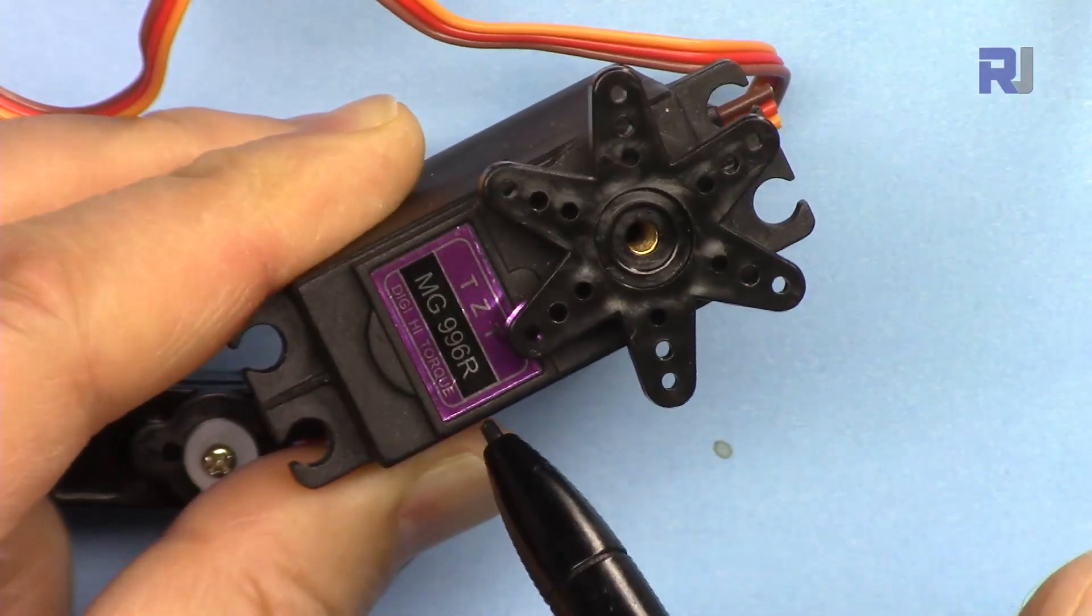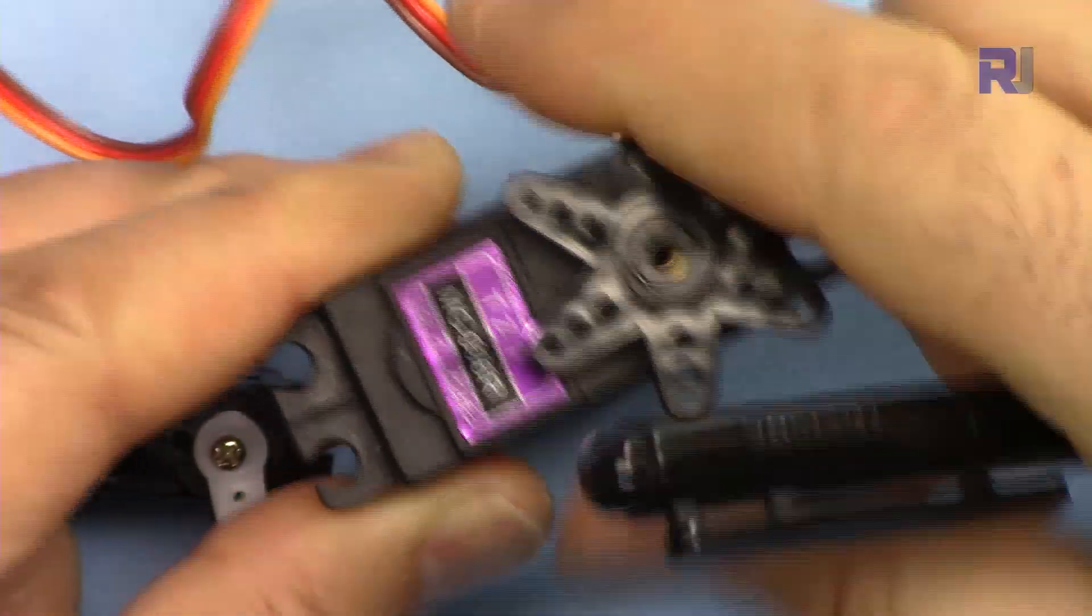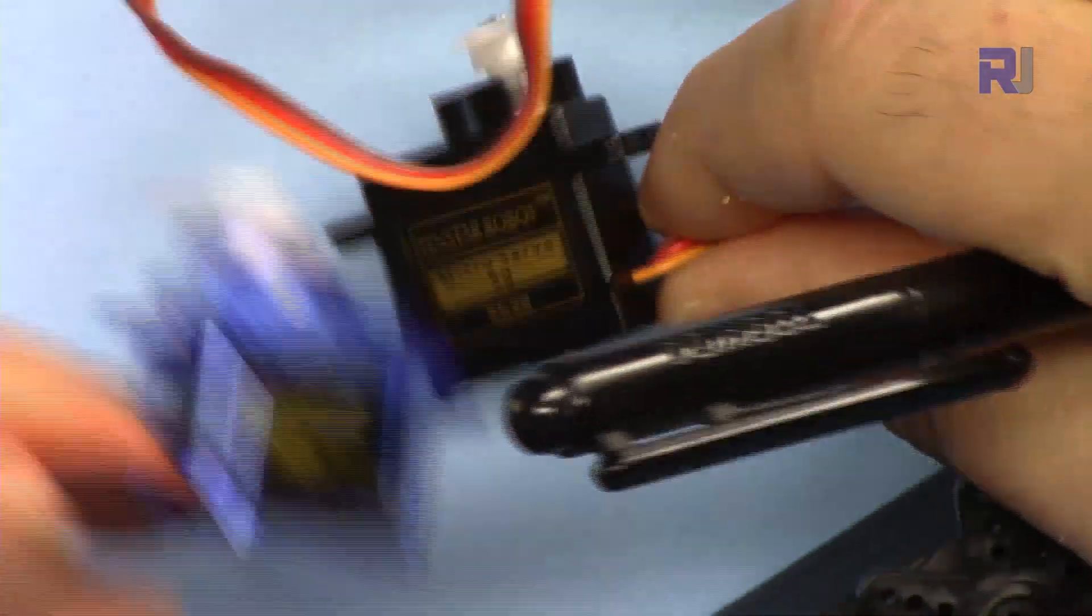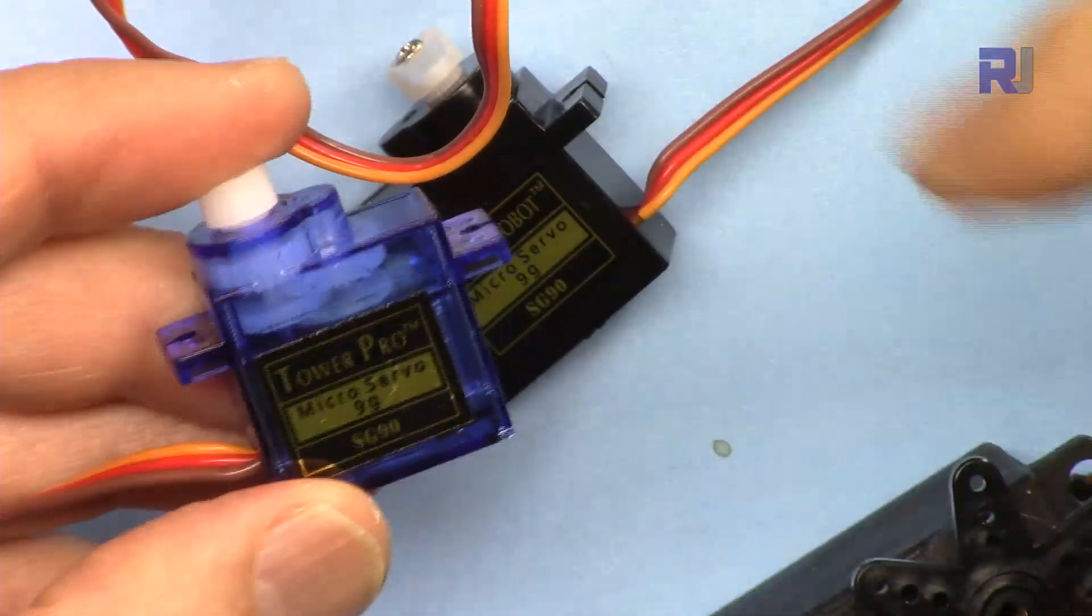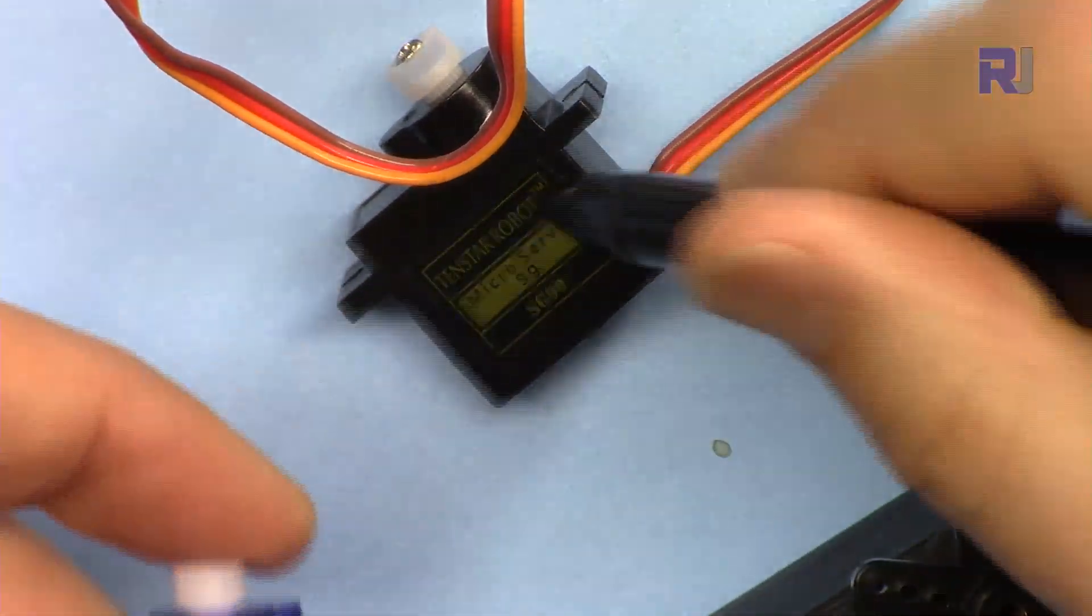So this is MG966R version, and this is the metal gear. This is all metal and this is a plastic gear, so this will be much cheaper, like three or four or five times cheaper than this.